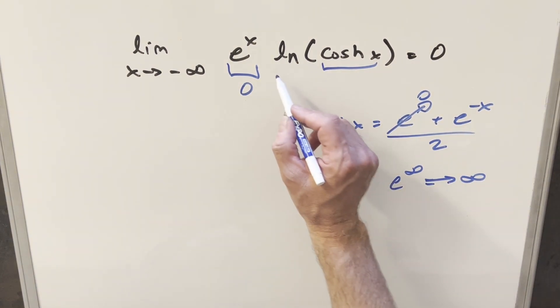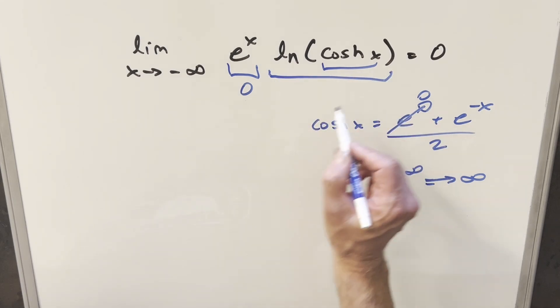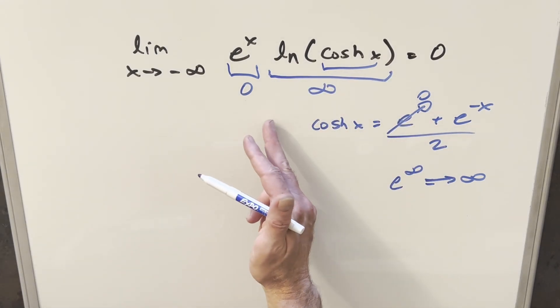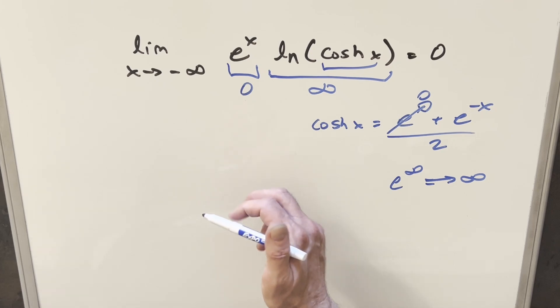So what that's saying is we actually have an indeterminate form here. We have zero times infinity. And so we don't quite know what's happening. We're not sure if this could be zero, this could be infinity, this could be five, this could be doesn't exist. This could be a lot of things.